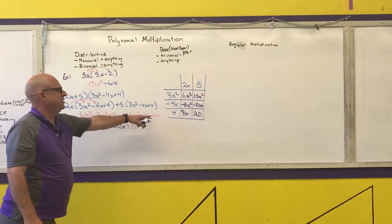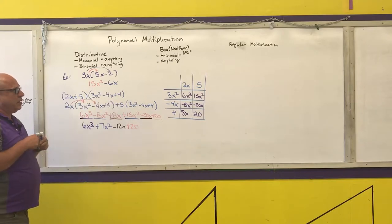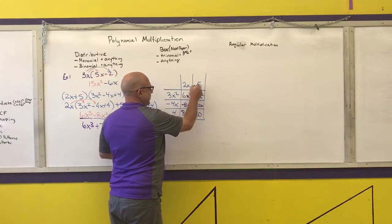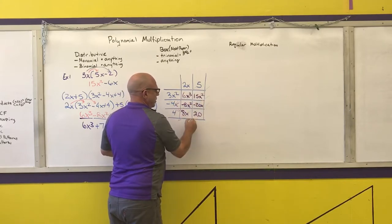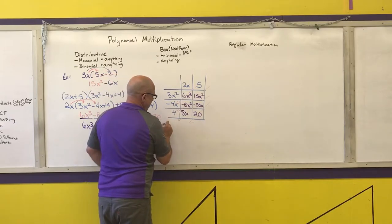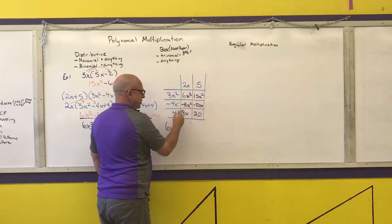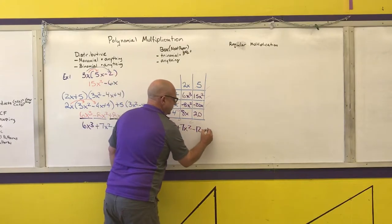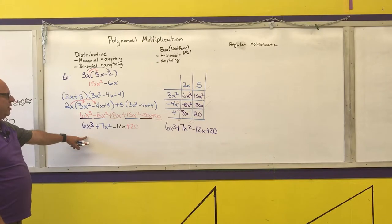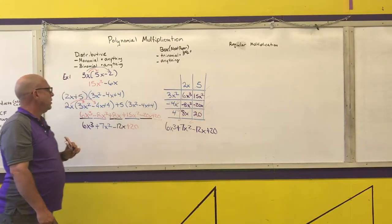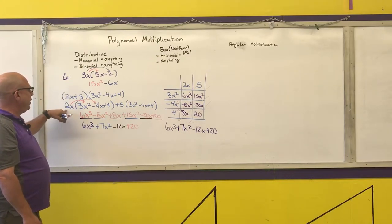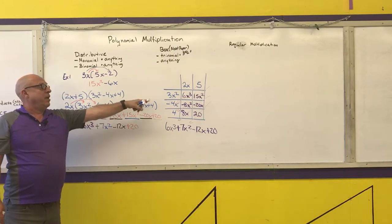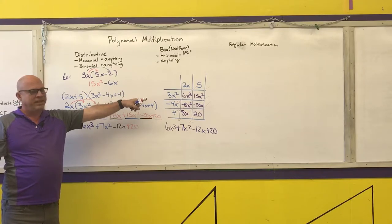Notice I have the exact same six multiplication results as before. Now I combine like terms. With the box method, like terms are typically on the diagonals: 6x³; 15x² minus 8x² is 7x²; negative 20x plus 8x is negative 12x; plus 20. I get the exact same answer. I did have to rewrite — pulling the binomial out to multiply by each term — and this starts to get big for anything more than a trinomial times a trinomial.